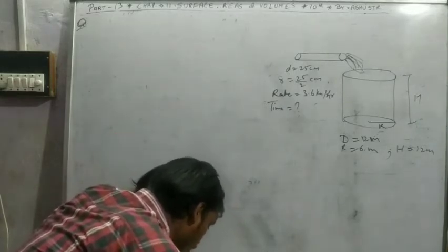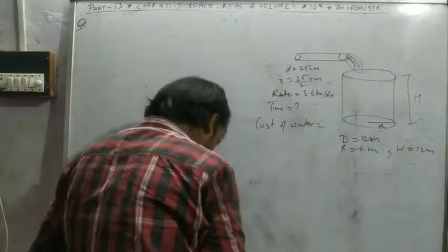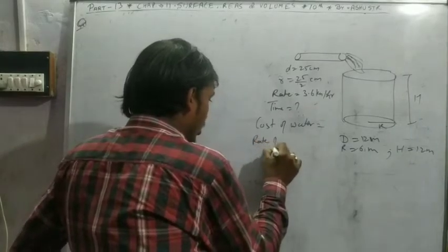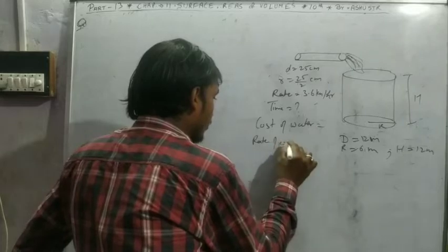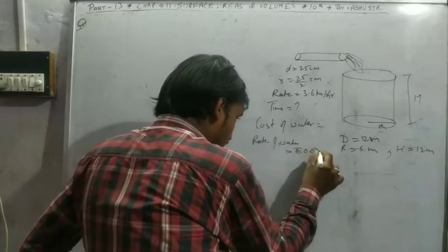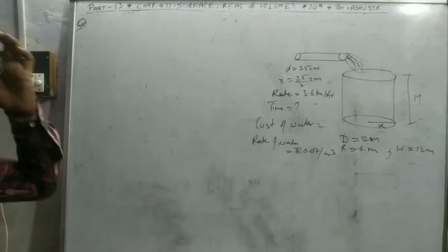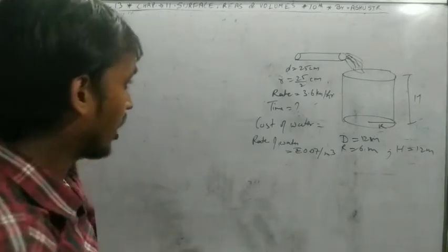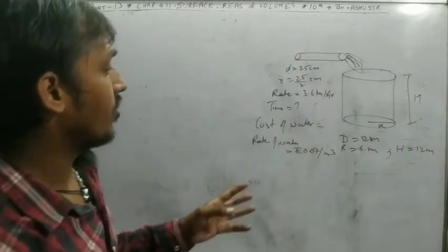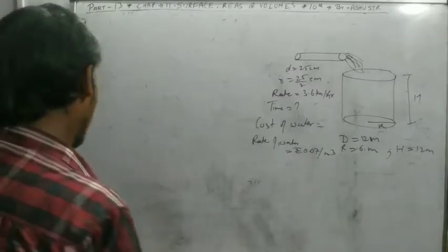Also find the cost of water if the rate of water is 0.07 rupees per meter cube. So this question has two things: first, the time taken by the pipe to fill the tank, and second, what's the cost of the water.